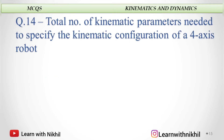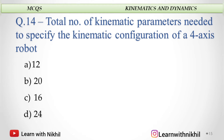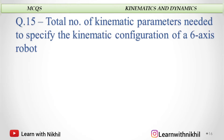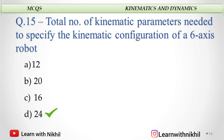Same question for a 4-axis robot: with the same solution, 4 multiplied by 4 equals 16, so the answer is 16. Similarly, if asked for a 6-axis robot, then 6 multiplied by 4 equals 24, so the answer is 24.